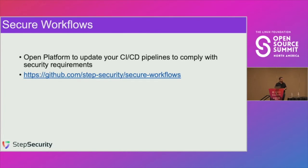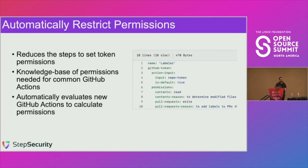Secure Workflows is an open platform to update CI/CD pipelines to comply with security requirements, and you can find it at github.com/step-security/secure-workflows. One of the things it does is set token permissions automatically. It does the same steps I listed but in an automated manner. In addition, it has a knowledge base of what permissions are needed by common GitHub actions, stored as a YAML file. For the labeler GitHub action, for example, it specifies that the permissions needed are contents read and pull request write, with a reason provided. When it evaluates a workflow, it goes through each action, looks up the knowledge base, sums up the required permissions, and comes up with a recommendation.